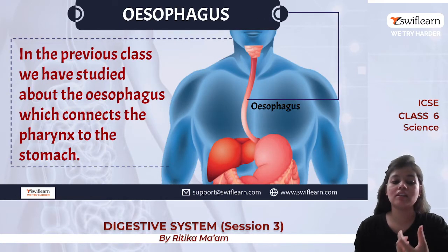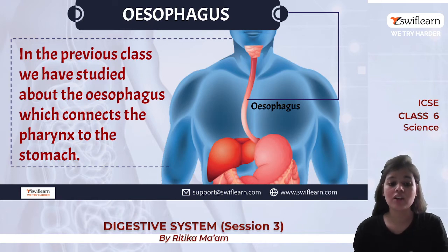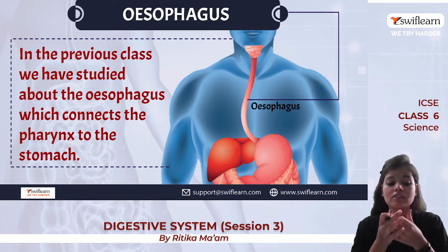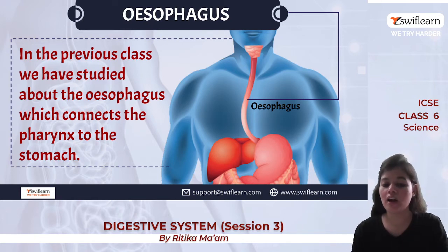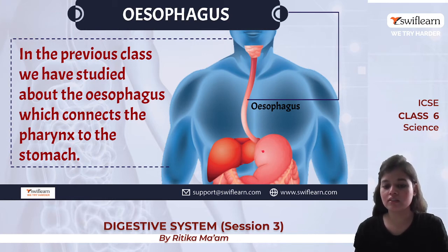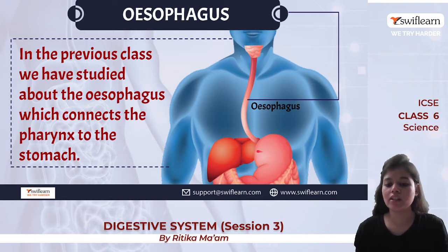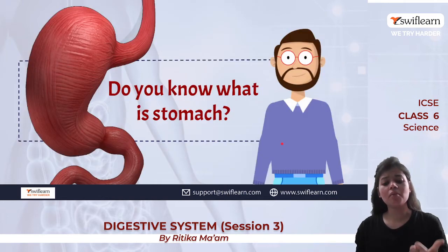The esophagus is a long tube-like structure which connects our pharynx to the stomach. It is a tubular structure that connects the pharynx with the stomach.